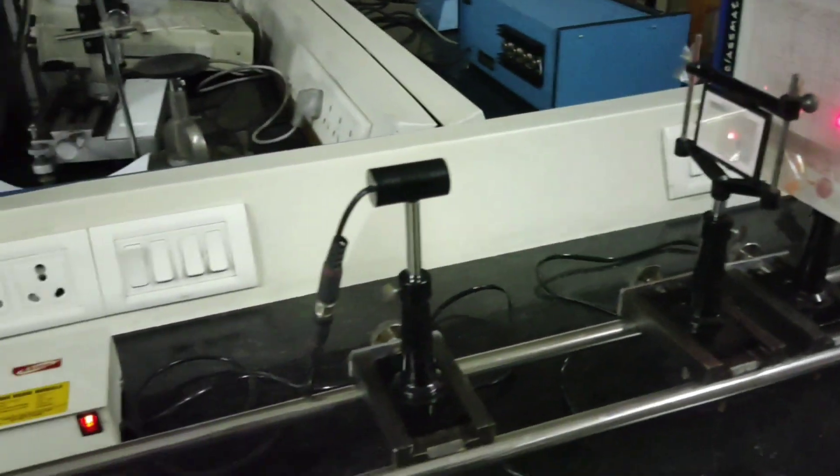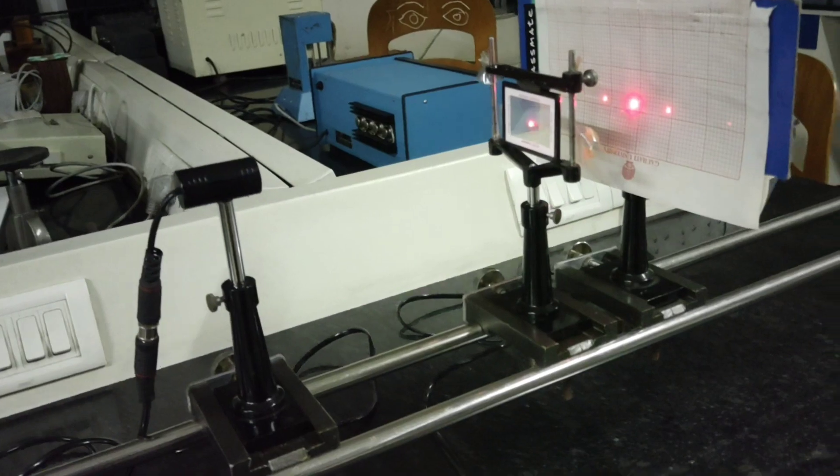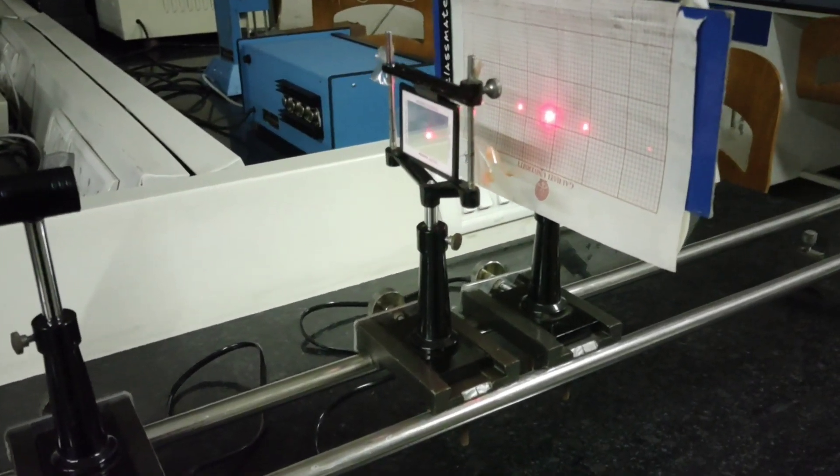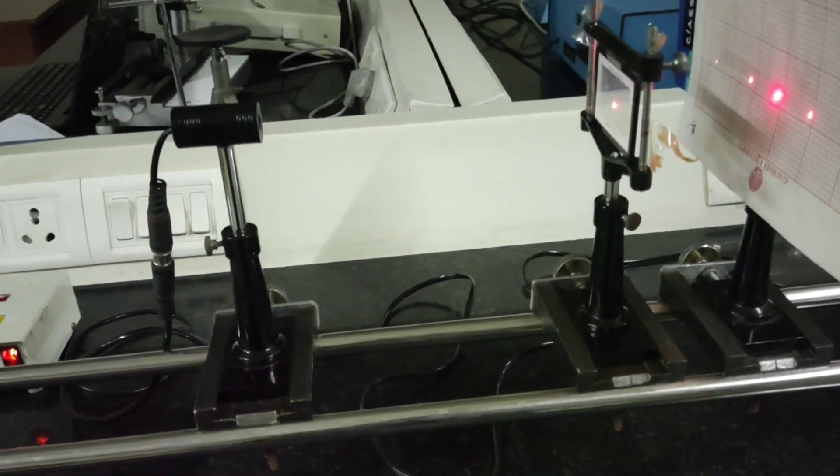We will use a graph paper for measurement instead of an optical screen. We place all three apparatus - the laser source, grating and the screen - on the optical bench.